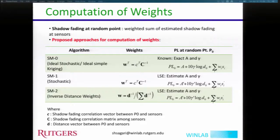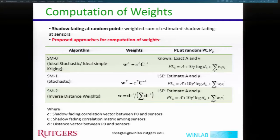SM2 is the most practical approach. In practice it's not possible to have perfect correlation values, so instead we use distance values. A sensor located closer to P0 proportionally receives a higher weight than other sensors — this is how we apply the inverse distance weighting method. For A and gamma, we estimate these values as well.